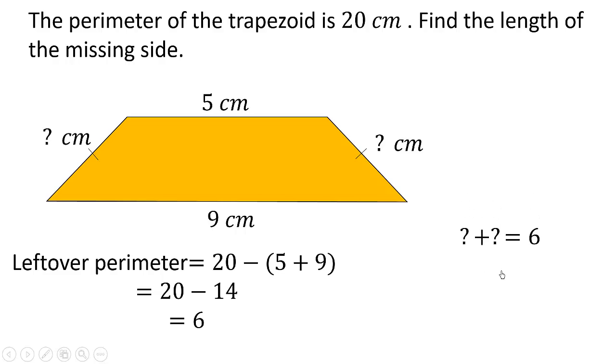The only number in mathematics that can add to itself to give 6 is 3. So it means that the missing side length is equal to 3 centimeters.